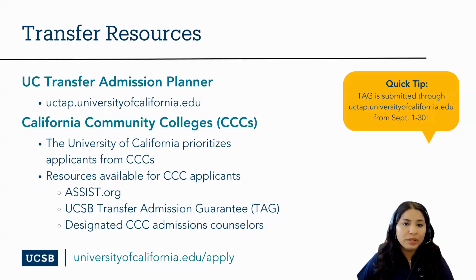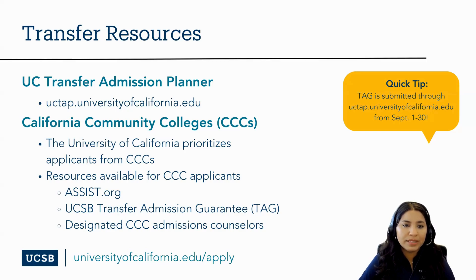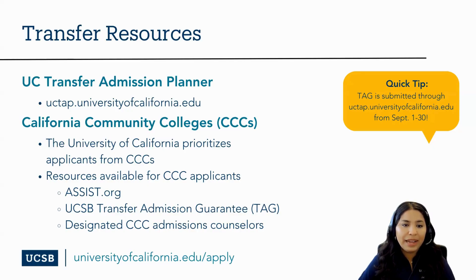We strongly encourage you to create a UC Transfer Admissions Planner (UC TAP) account, where you'll be able to track and plan your coursework and progress for meeting UC eligibility requirements. This will also allow UC staff to communicate important information. UC TAP is also where you can submit your TAG applications from September 1st to September 30th. The University of California prioritizes applicants from California Community Colleges. Applicants from California Community Colleges can utilize assist.org to review course transferability and major preparation requirements. The Transfer Admission Guarantee is only open to students transferring from California Community Colleges, and California Community College students can take advantage of designated UC admissions counselors.